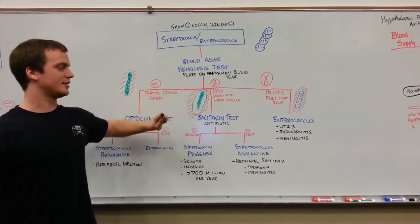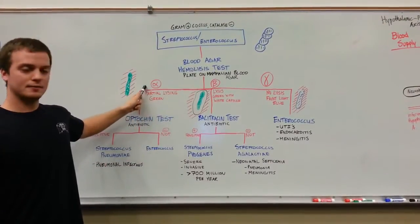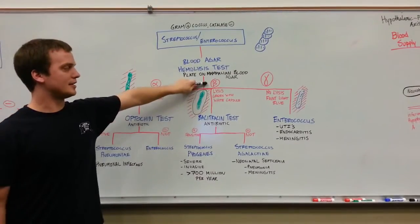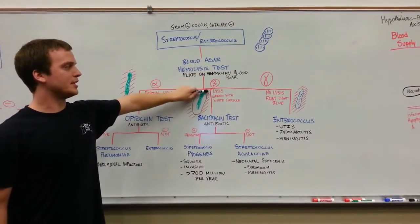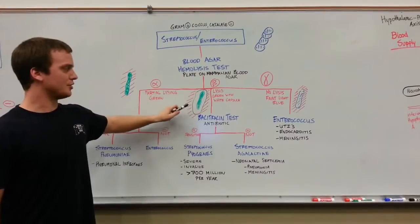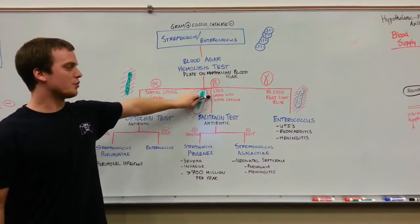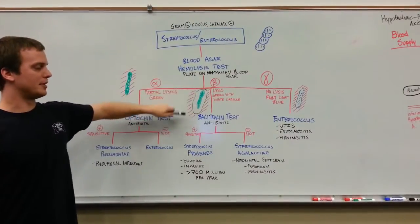Back to the hemolysis test. If instead of alpha you get a beta result, this indicates complete lysis of the organism. You'll see this visibly as a green organism with a white capsule, denoted by this picture.